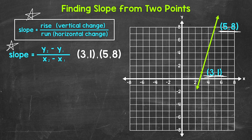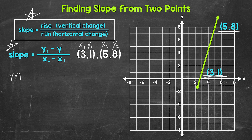Let's label these now. For (3, 1): 3 is our x-coordinate, so let's label that as x1, and 1 is our y-coordinate, so let's label that y1. For (5, 8): 5 is going to be x2, and 8 is going to be y2. Now all we need to do is plug these into our formula. So slope equals y2 minus y1 over x2 minus x1.